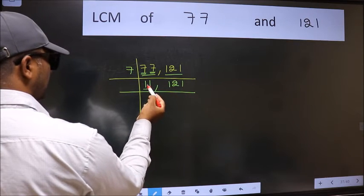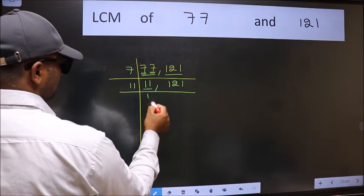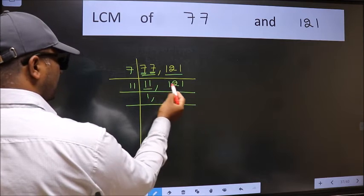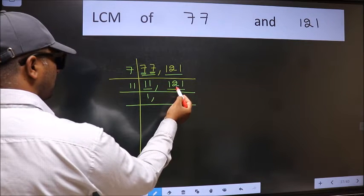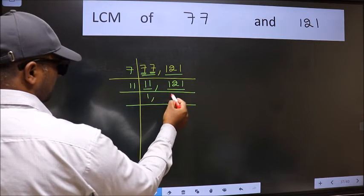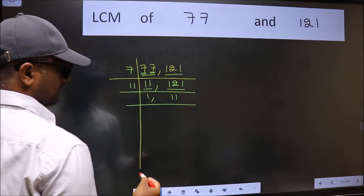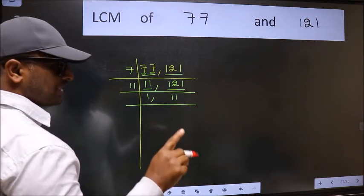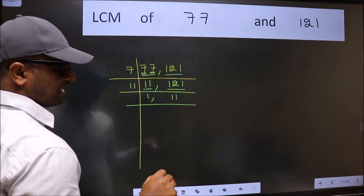Now here we have 11, 11 is the prime number. So 11 times 1 is 11. The other number 121, when do we get 121 in 11 table? 11 times 11 is 121. Always remember 11 into 11, 121.